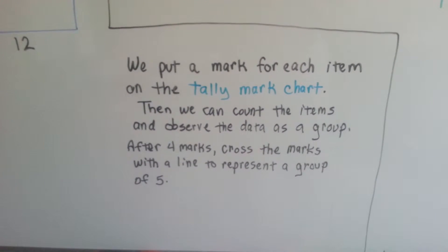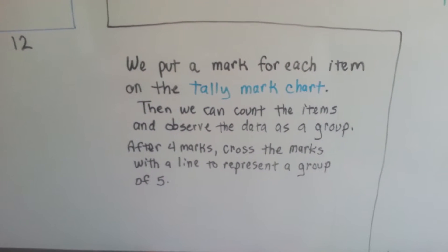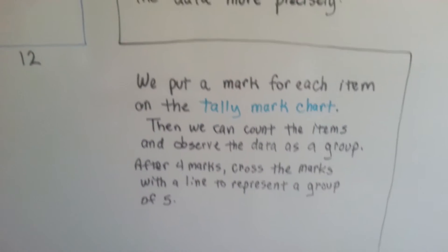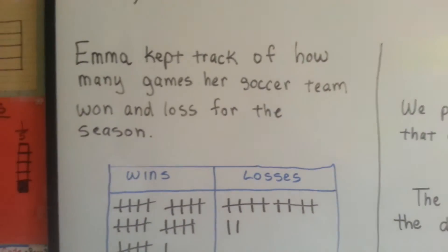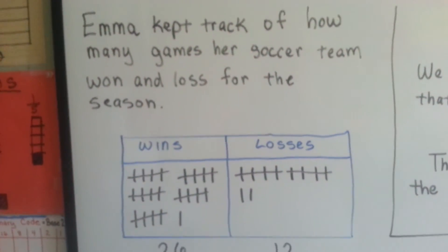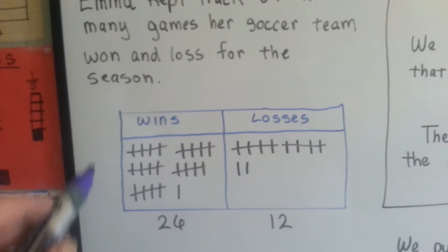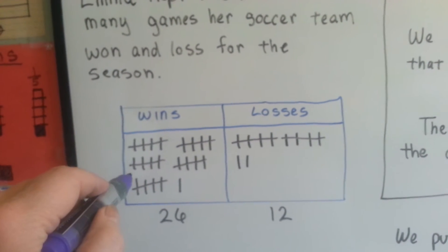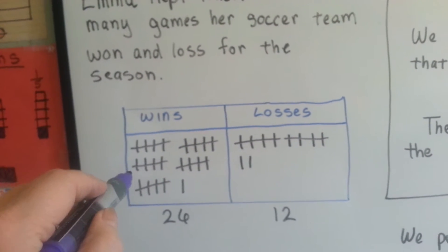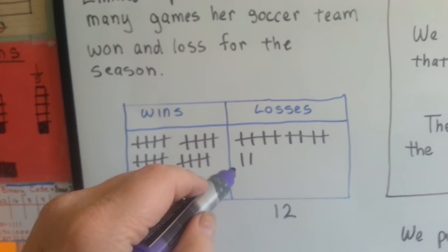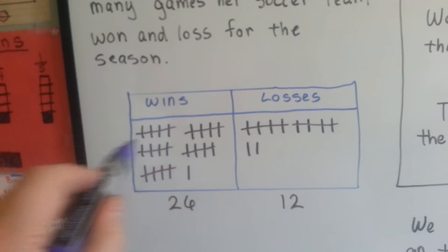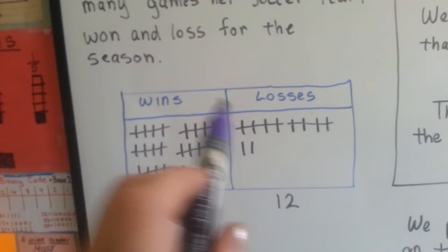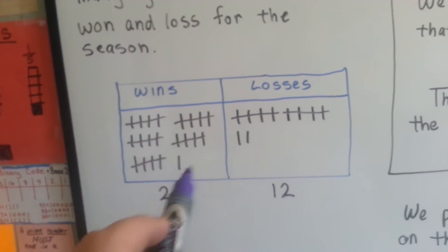After 4 marks, we cross them with a line to represent a group of 5. So if Emma kept track of how many games her soccer team won and lost for the season, she put a line for each win and a line for each loss, and when she got to 4, she crossed it so she could count groups of 5.